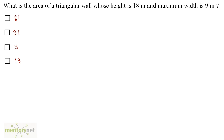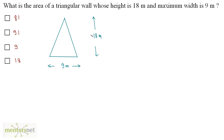What is the area of a triangular wall whose height is 18 meters and maximum width is 9 meters? We have been given the height of the triangle as 18 meters and the width, or the base, as 9 meters. The formula for the area of a triangle is half into base into height.